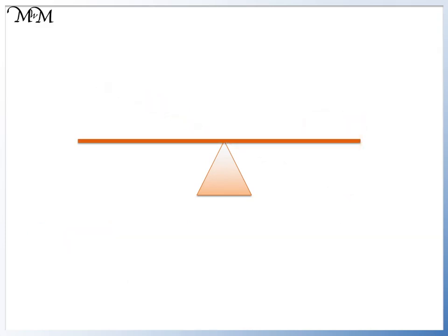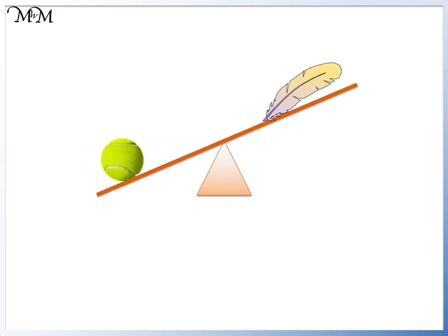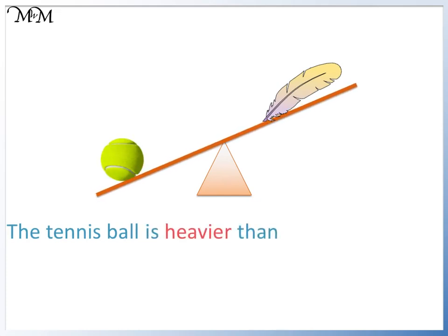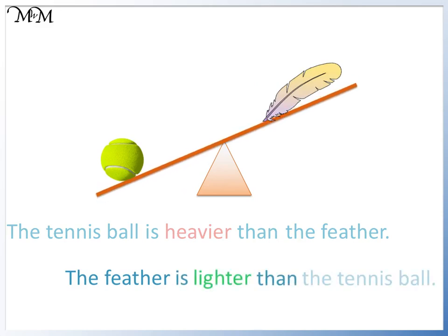This time we will use the scales to compare a tennis ball and a feather. The side with the ball moves down and this causes the side with the feather to move up. The ball is pushing down on the scale more than the feather is. So the tennis ball is heavier than the feather. Or we can say the feather is lighter than the tennis ball.